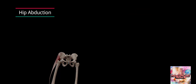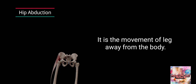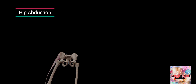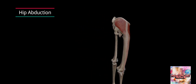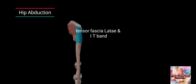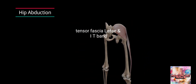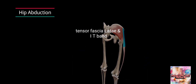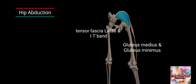Hip abduction. It is the movement of the leg away from the body. The muscles acting are tensor fasciae latae and IT band, and gluteus medius and minimus.